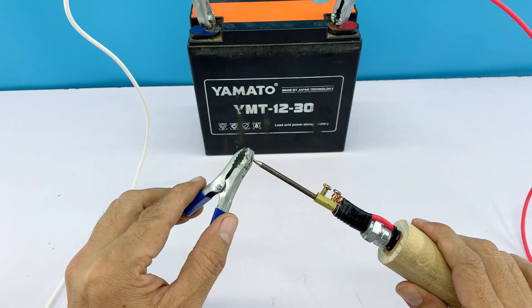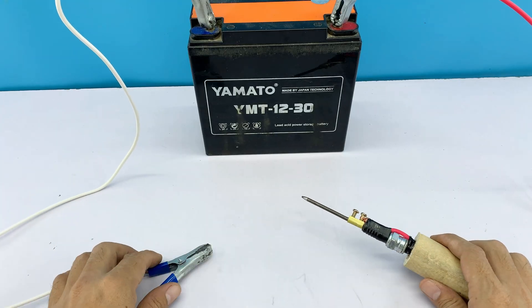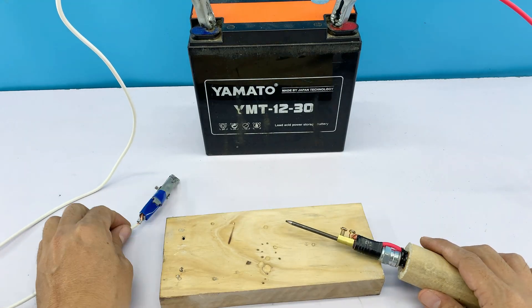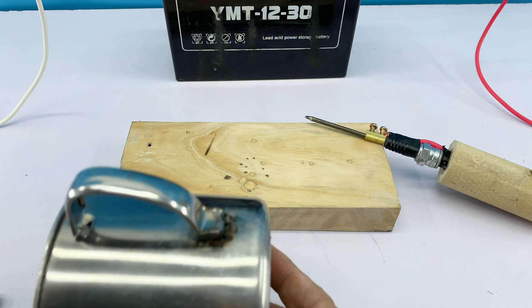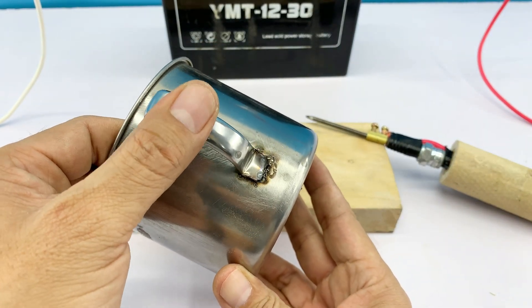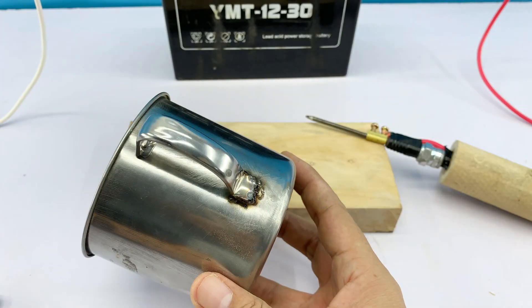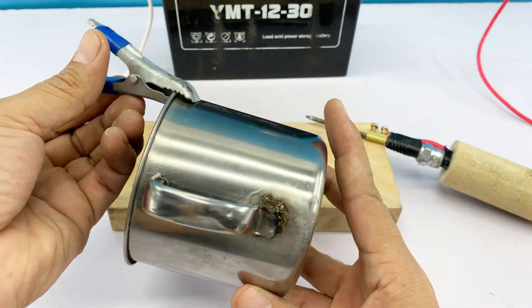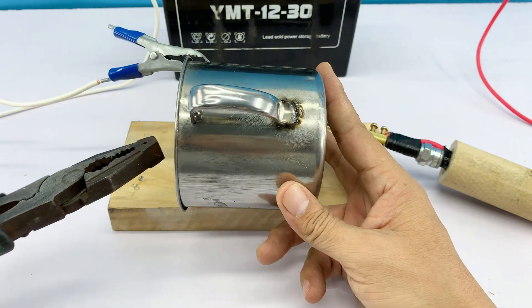When the two terminals touch and create an electric arc, that means the setup is working. But to know how well it performs, we need a real test. So I'm trying on this cup with a broken handle. Just touch the welding tip to the joint and let the arc do its job. We'll see right away how effective it really is.